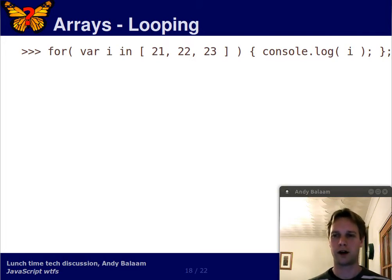Anyway, i is going to be going through this array and every step in the loop we're going to write out the value of i. Okay, so surely we all know what this code is going to print, right?